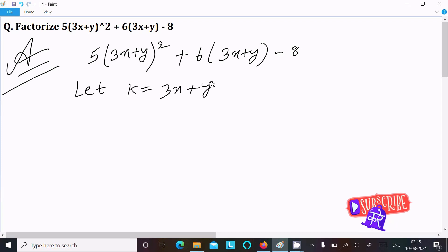So assume that. Now in place of 3x + y we can write: 5k² and this here 6k - 8. Now see it's looking so simple.